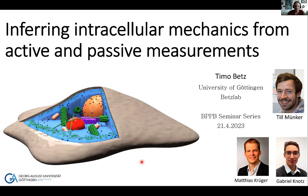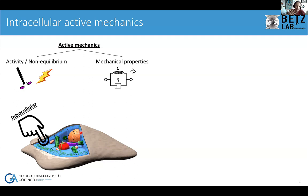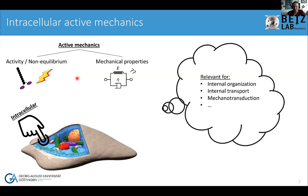When I talk about intracellular mechanical properties, it boils down to two main things — we call this active mechanics. One part is the plain mechanical properties you can test, for example by poking a cell in AFM experiments. But cells are also active systems with motor proteins and energy-consuming metabolic processes out of thermodynamic equilibrium. We need to look at activity and mechanical properties together in a combined way.